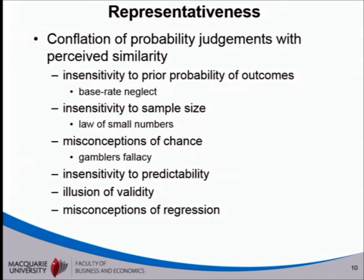This is why it's representativeness — because companies described as being innovative and dynamic, you'd expect them to be profitable. There's an association between the description and the outcome because being profitable seems to be representative of that positive description of the company.